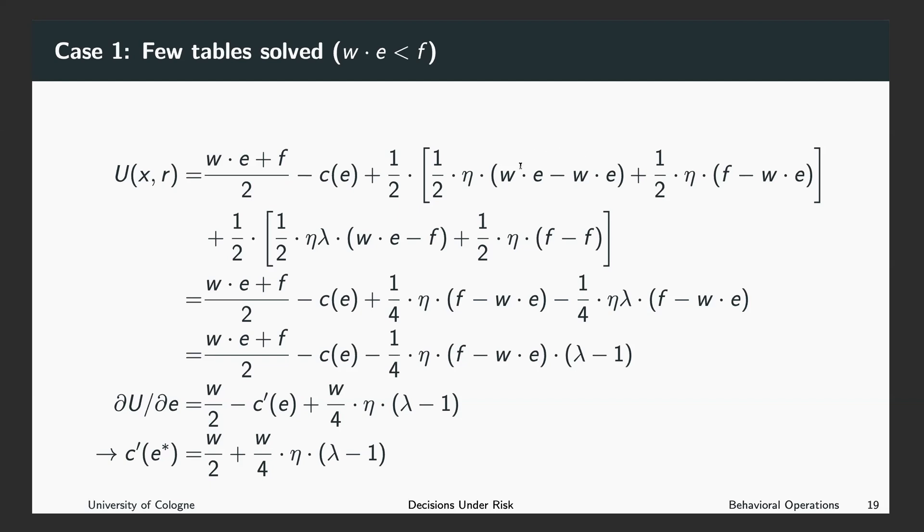In this case, with probability one half, we really get the piece rate. Then our reference point is just equal to the realization. Then this term is zero.